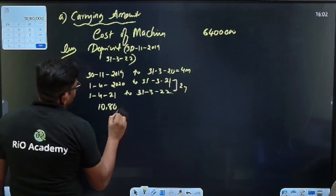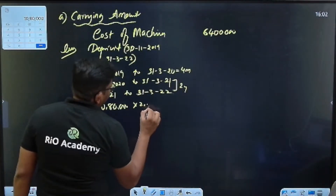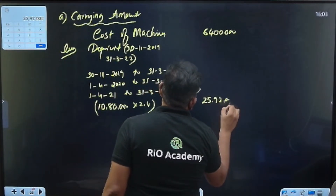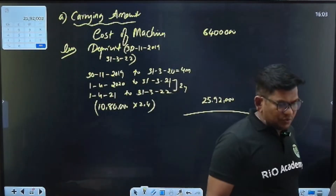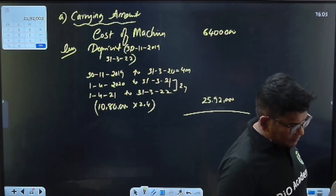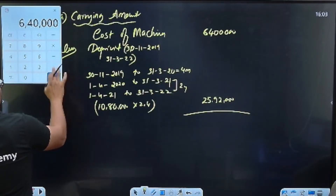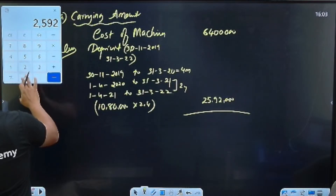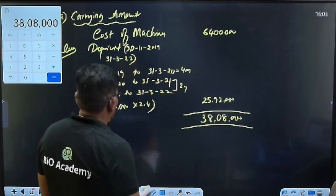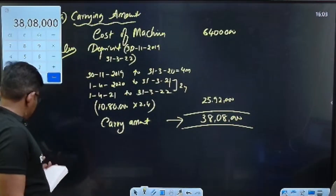The annual depreciation is 10,80,000. Multiply by 2.4 years (28 months). So accumulated depreciation is 25,92,000. Therefore carrying amount = 64,00,000 minus 25,92,000 = 38,08,000. That is the carrying amount.